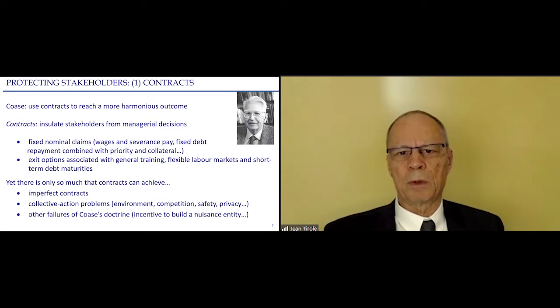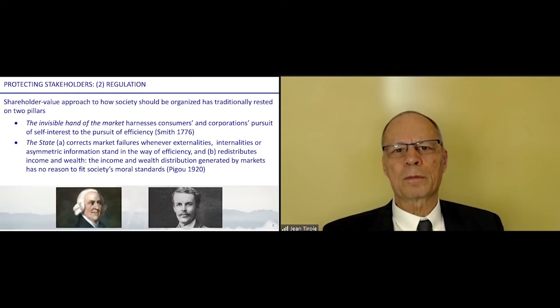Contracts are very imperfect. There are collective action problems as well. For example, in climate change, we are 7 billion people in the world. We cannot just all write contracts. Same thing for most public policies like competition policies, safety of food, privacy, and so on. We need to have some collective action. And there are some other failures of the Coase logic as well. For example, we might want to build a nuisance entity in order to then bargain its withdrawal. It's a little bit technical, I'm sorry, but contracts have their failures.